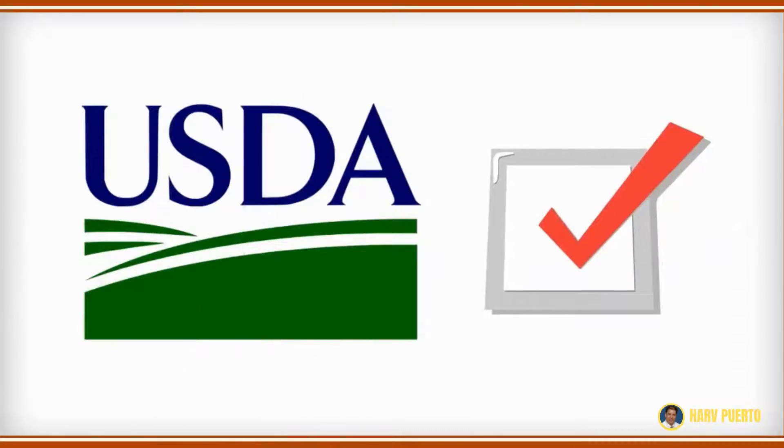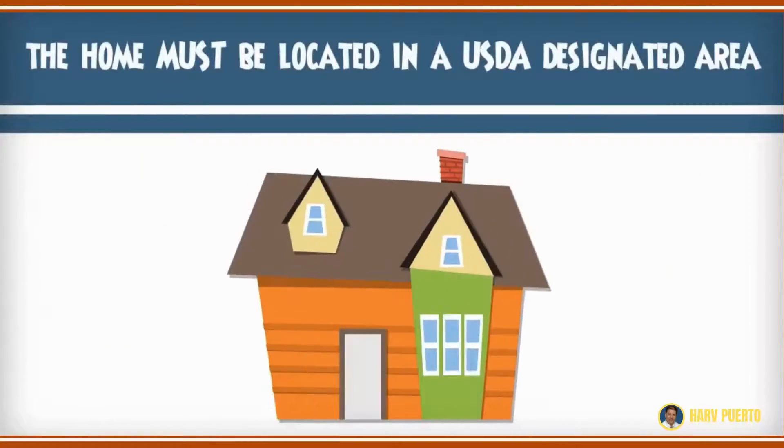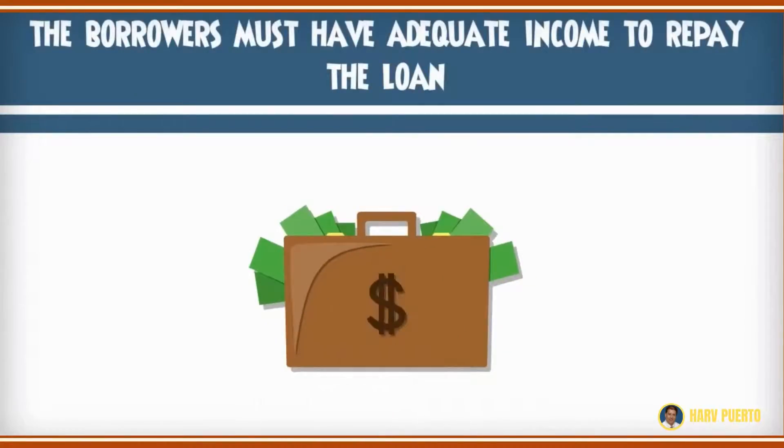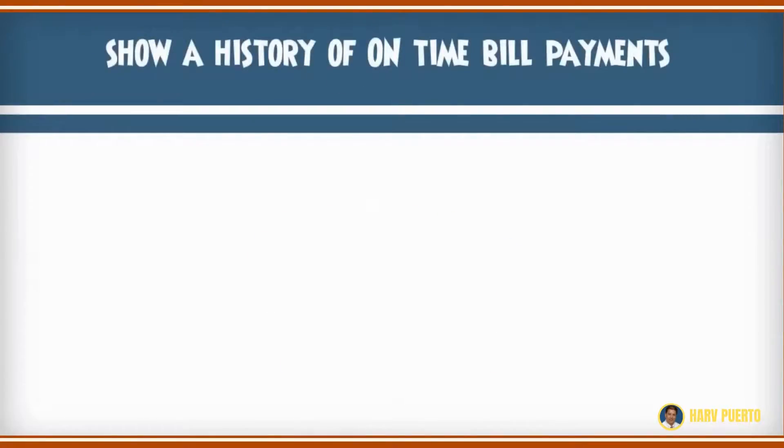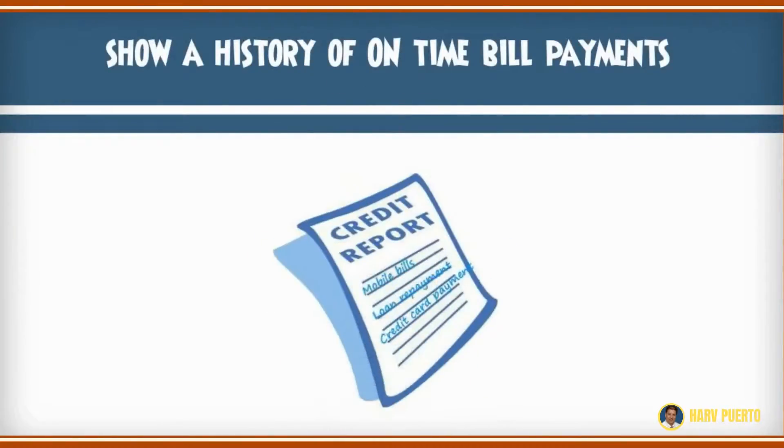To qualify for a USDA home loan, number one, the home must be located in a USDA-designated area. Number two, the borrowers must have adequate income to repay the loan. And number three, show a history of on-time bill payments.